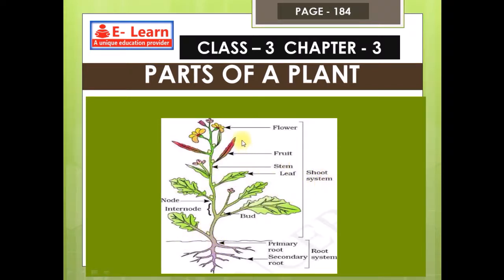The shoot system includes flower, fruit, stem, leaf, bud, node, and internode.